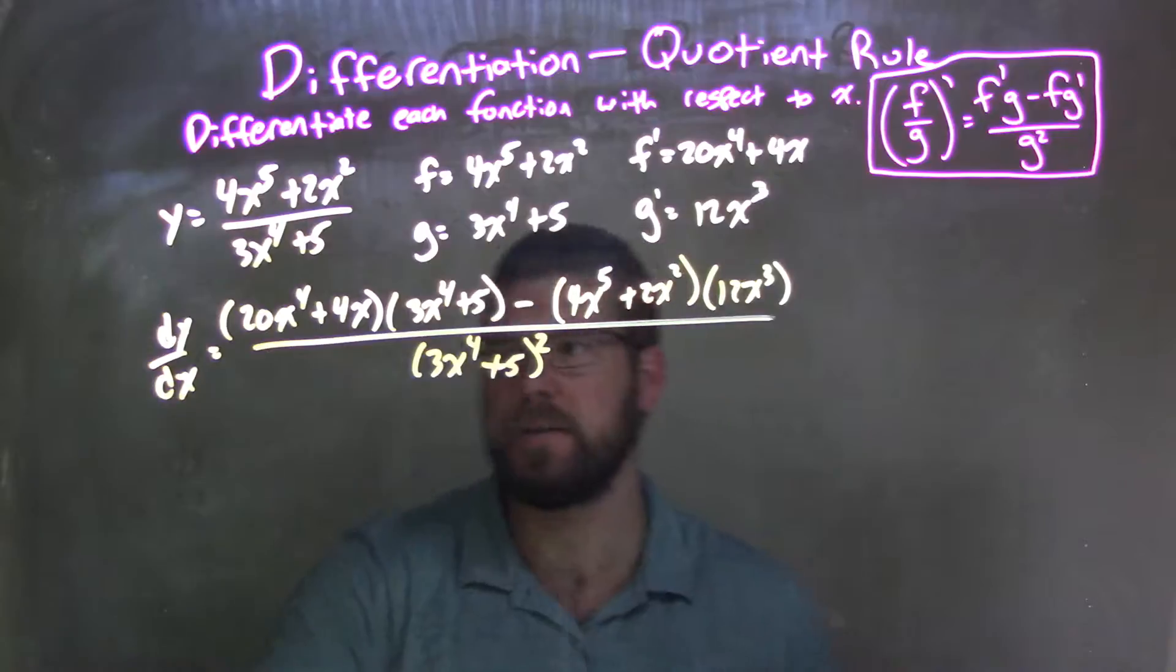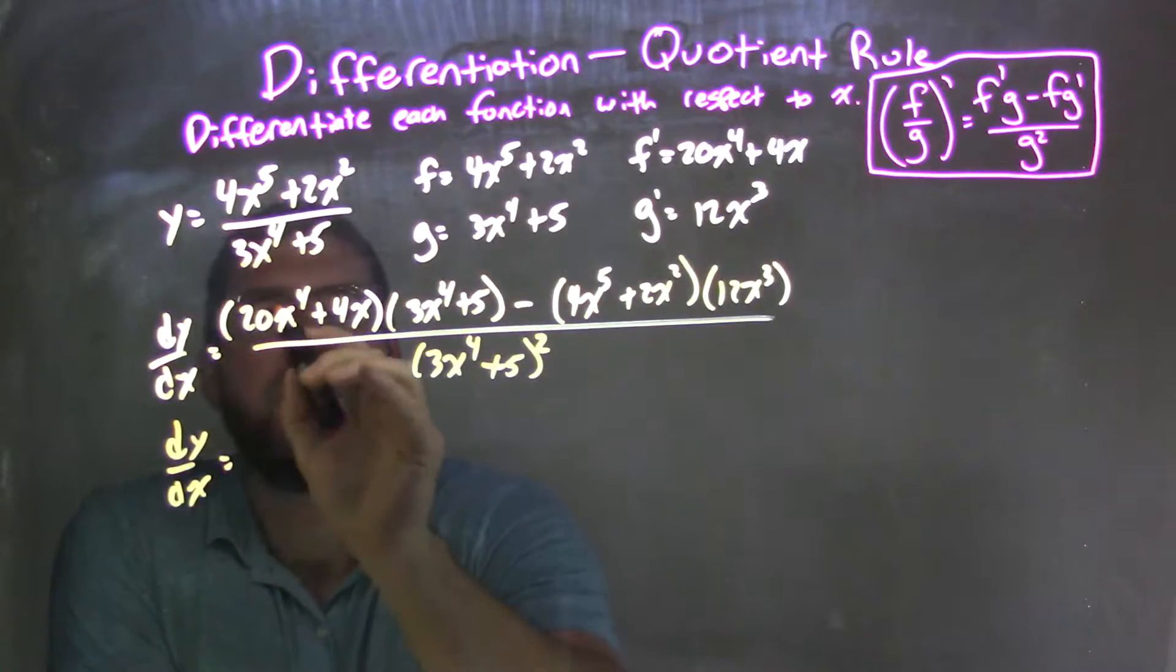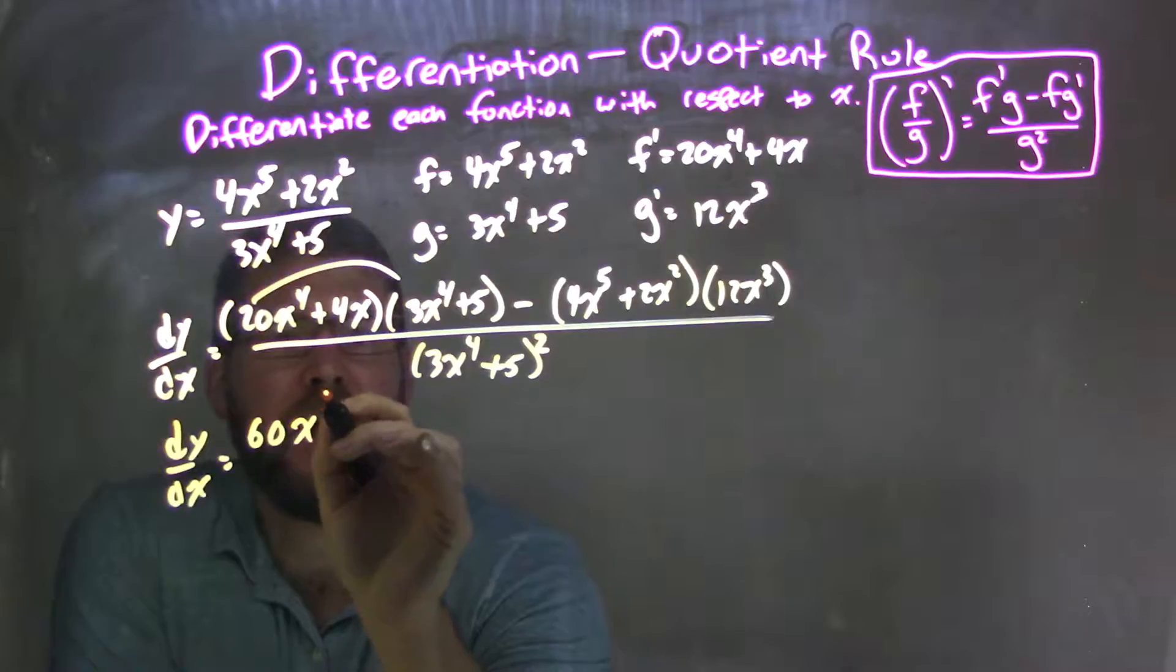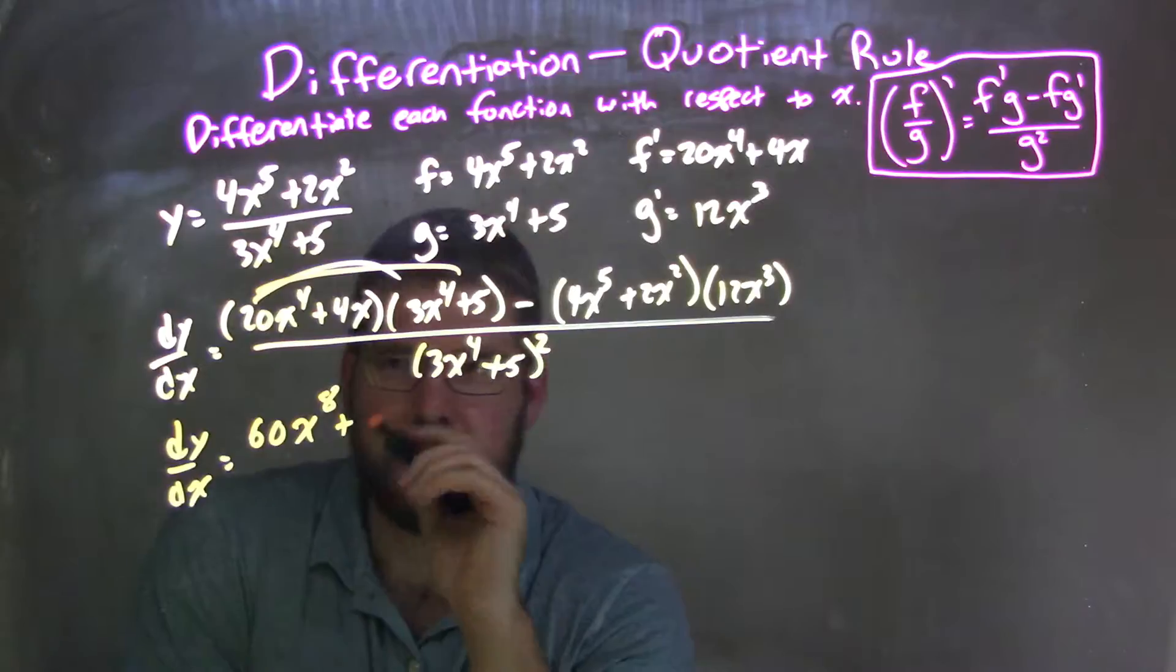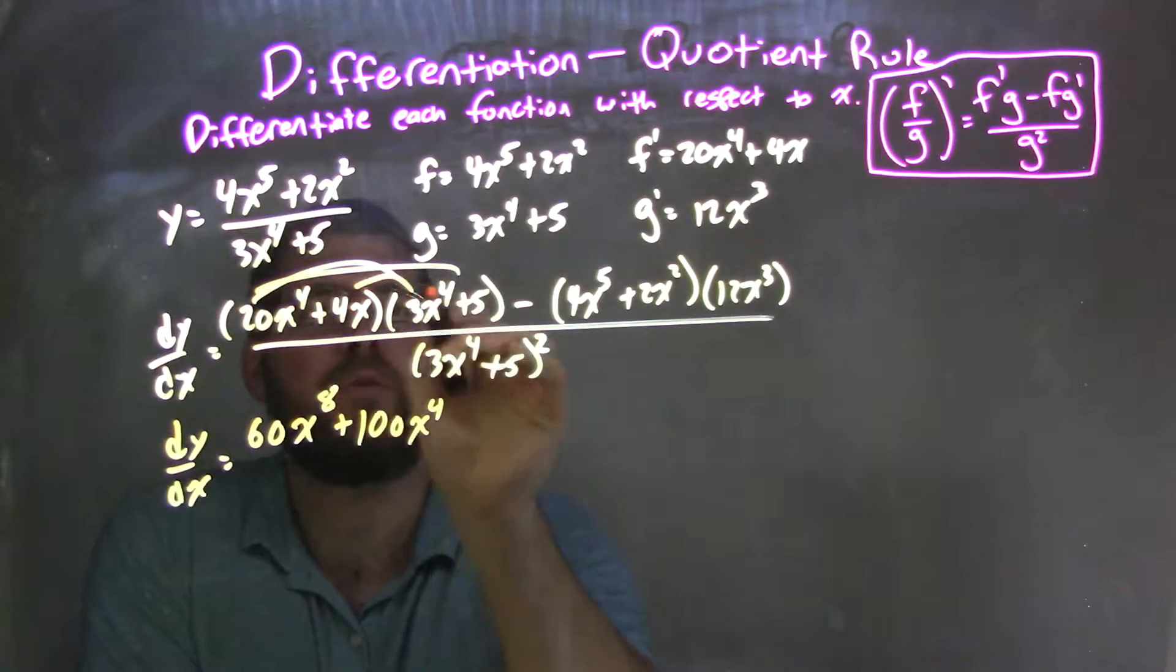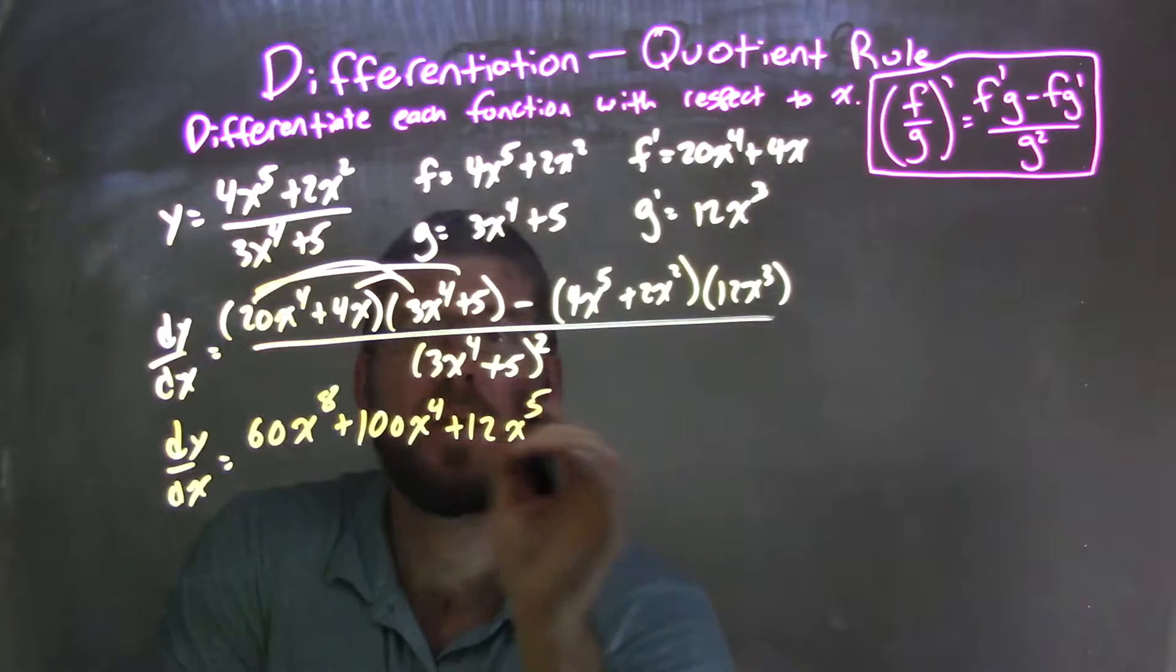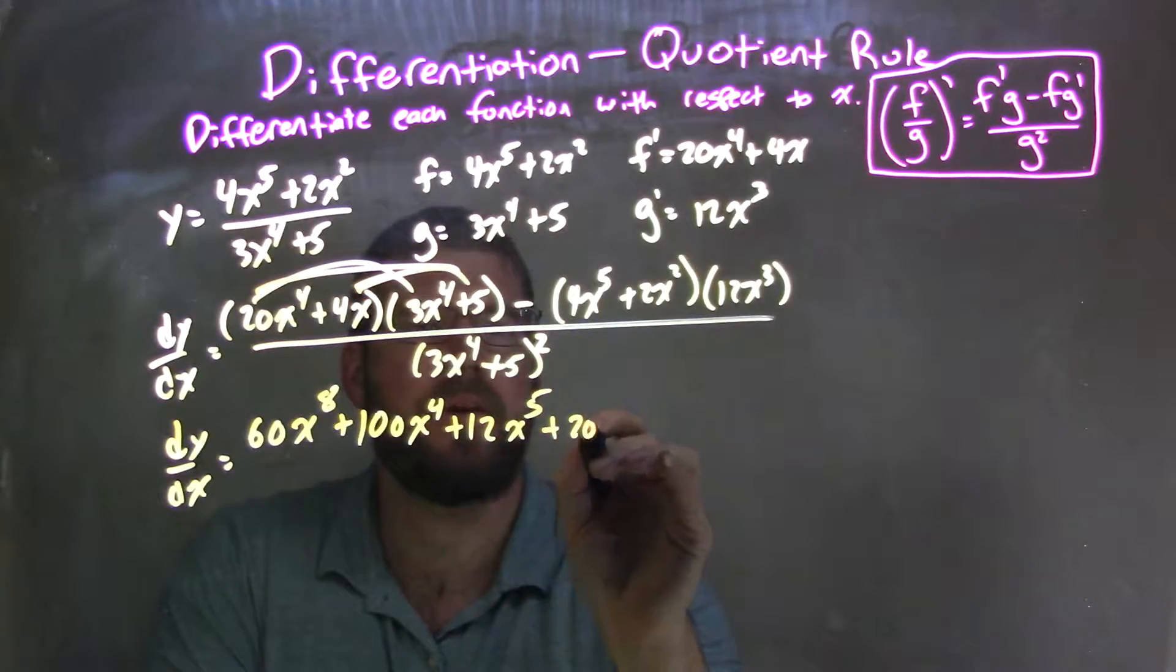So we'll be distributing and simplifying. So we have dy dx here. 20 times 3 is 60. So we have 60. And then we add exponents, x to the eighth power plus 20 times 5 is 100. So we have 100x to the fourth. Then 4x times 3x to the fourth power. We have 12 here, x to the fifth power.